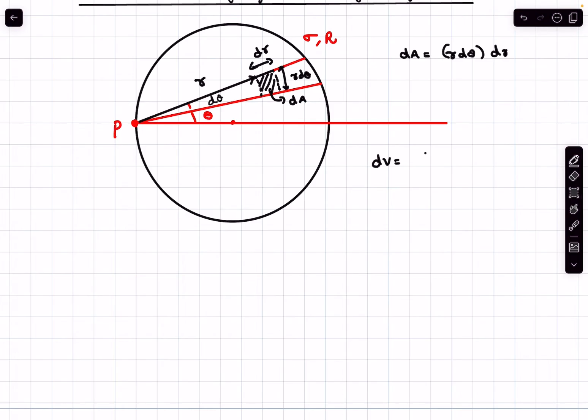If I consider the area of the small patch as dA, then I can write dA as r dθ multiplied by dr. As this is a very small charge, we can use the formula we discussed earlier for the point charge. By using that we get the potential as 1/(4πε₀) times the charge of this element, which is sigma times dA, divided by the distance of the element from point P, which is r.